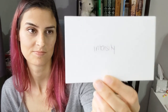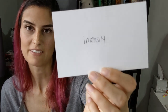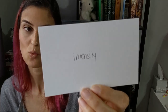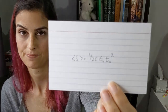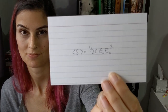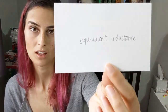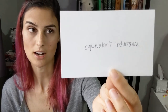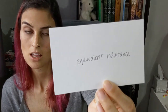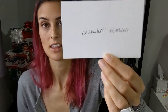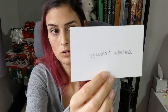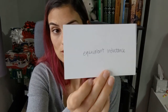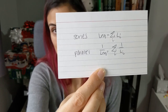Intensity — the average intensity: S equals one half C times epsilon naught times E naught squared. Equivalent inductance: when inductors are in series the equivalent inductance is the sum of the individual inductances, and when they are in parallel one over the equivalent inductance equals the sum of one over the individual inductances — similar to resistors.